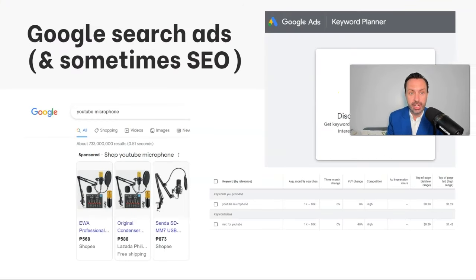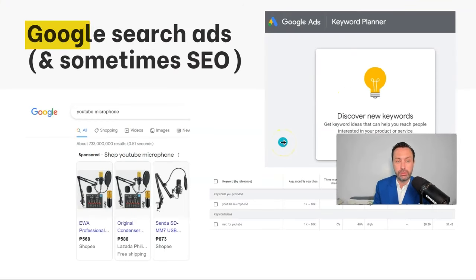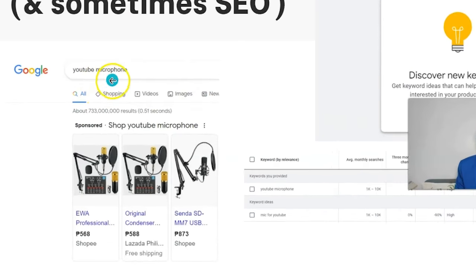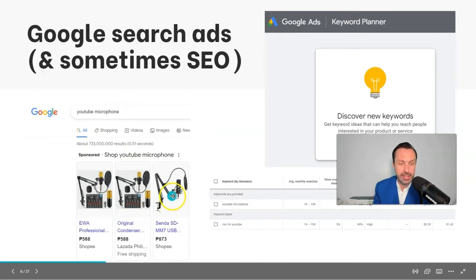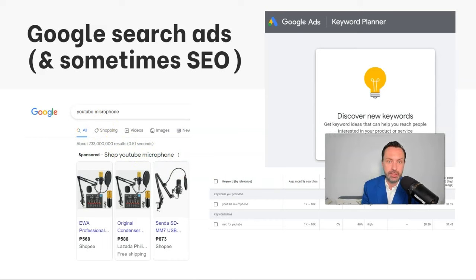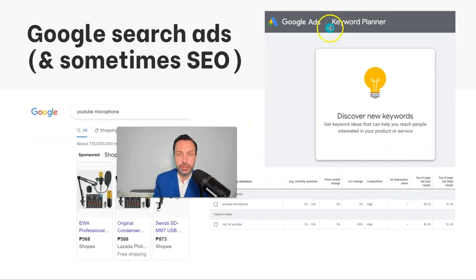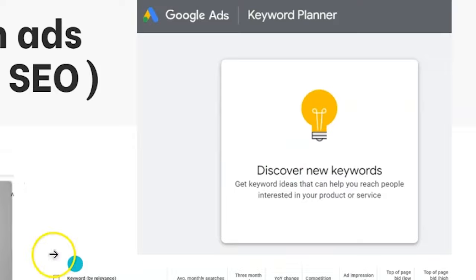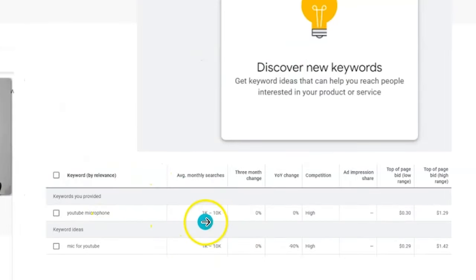Another easy way to target in-market audiences is using Google Search Ads. For example, I typed into Google 'YouTube microphone' and we see some examples of ads here. This is successful because somebody searching for 'YouTube microphone' is probably in market — they're looking to buy something, and because it's not overly expensive they'll likely buy fairly soon. A good way to come up with keywords is to use Google Keyword Planner, and you can see here that 'YouTube microphone' in the United States generates searches of around 1,000 to 10,000 per month.